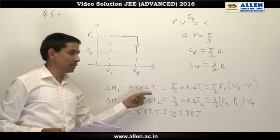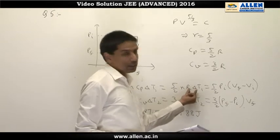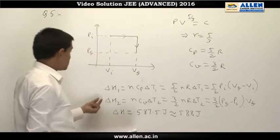During the isobaric process, heat given as n cp delta T, which is 5/2 n R delta T. n R delta T by ideal gas equation we can write as p_initial into (v_final minus v_initial).